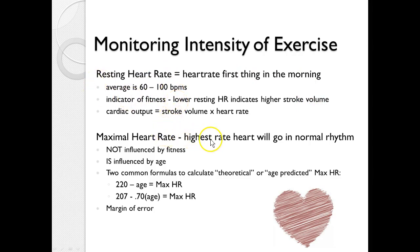Max heart rate is the highest rate the heart will go in a normal rhythm. It is not influenced by fitness, but is influenced by age. Two common formulas used to calculate the theoretical or age-predicted max heart rate include 220 minus age, or 207 minus 70% of the age. Each of these has a margin of error, so not all of your clients will fit neatly into this average.